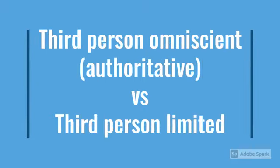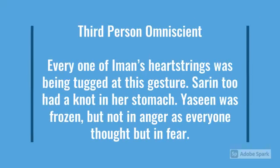As for the third person point of view, there are two kinds. The omniscient third-person point of view is when the narrator is all-knowing. It is when the narrator can get into the minds of each and every single character and reveal to the reader what they are thinking. The following extract, for example, is written in the omniscient third-person point of view. Take a moment to read this excerpt.